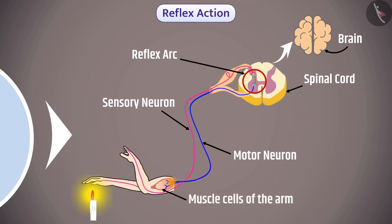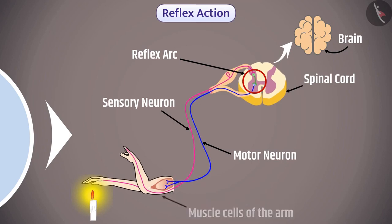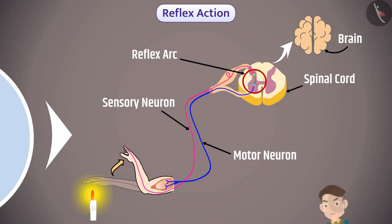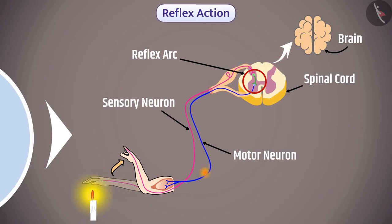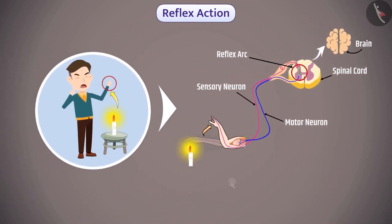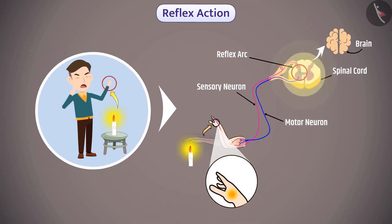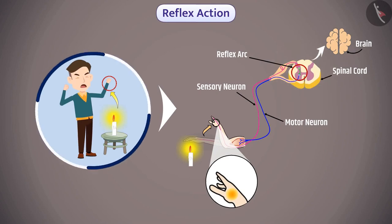Here the effector is the muscle cells of the arm. After receiving the signal, the action in the muscle cells causes the hand to be pulled away from the hot object — done without thinking. Had we spent time thinking about the response, there would be a delay sufficient to cause severe injury. The spinal cord controls reflexes and immediately responds to such situations.